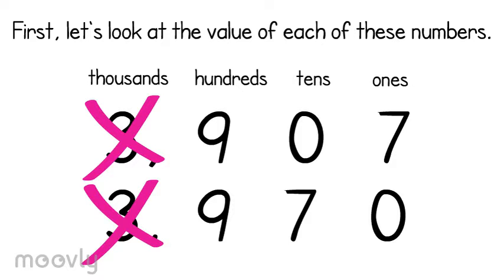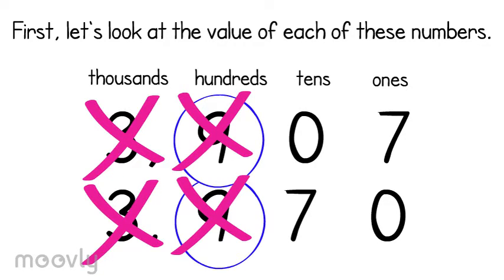Now, I look at the hundreds place. My first number has 9 hundreds. My second number also has 9 hundreds. Well, it's not going to help me either, so I keep moving over.